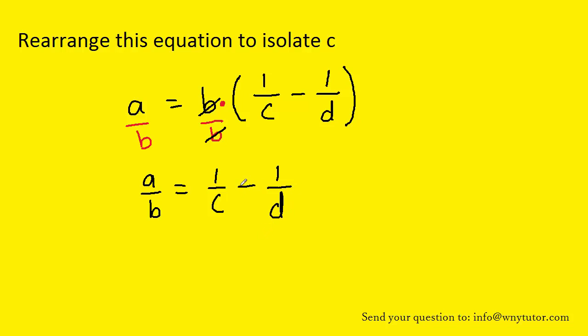We'll notice that we have the subtraction of the quantity 1 over D so we can do the inverse of that operation which of course is addition and add 1 over D to both sides of this equation. So the minus 1 over D and the plus 1 over D are 0 so those will cancel leaving us with just 1 over C on the right side.